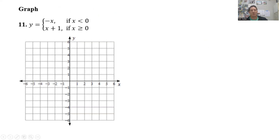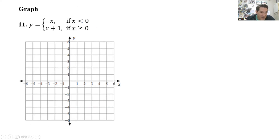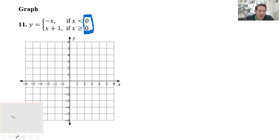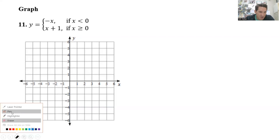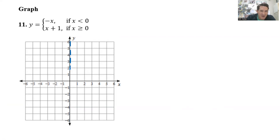Next up, we are going to be graphing these. The first thing we want to do is graph the lines normally and then erase what we don't need — that's the easiest way. Notice we have the 0 here; that is where we put our imaginary vertical line at x equals 0. In this case it is the y-axis where the function splits.